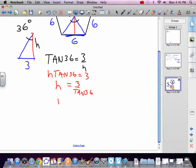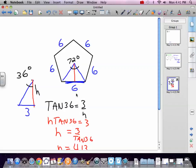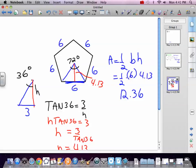3 divided by tangent of 36 equals 4.13. Awesome. We know the height. So now we know that this is 4.13. The area of that triangle, 1/2 base times height equals 1/2 times 6 times 4.13, which equals 12.39.